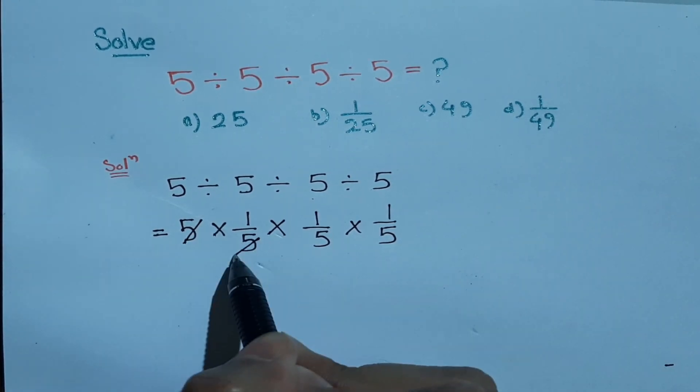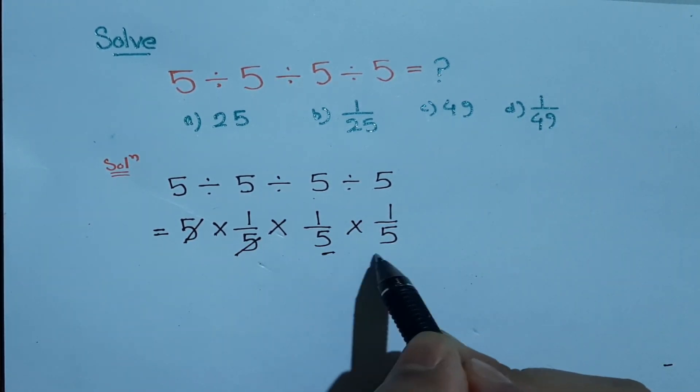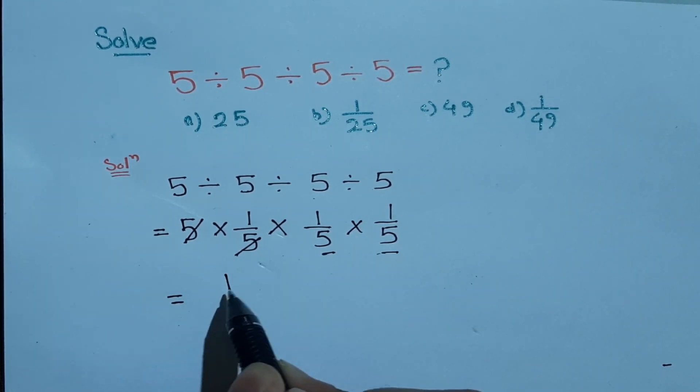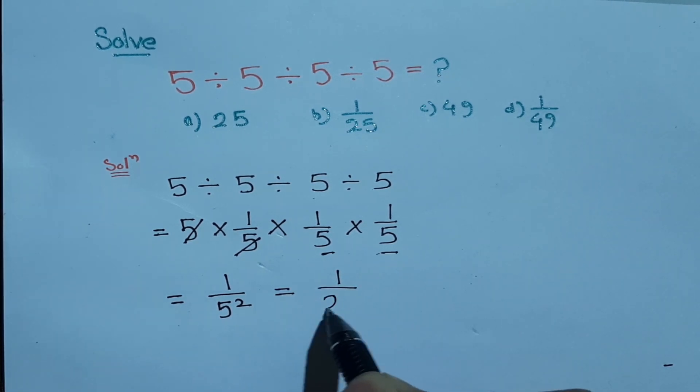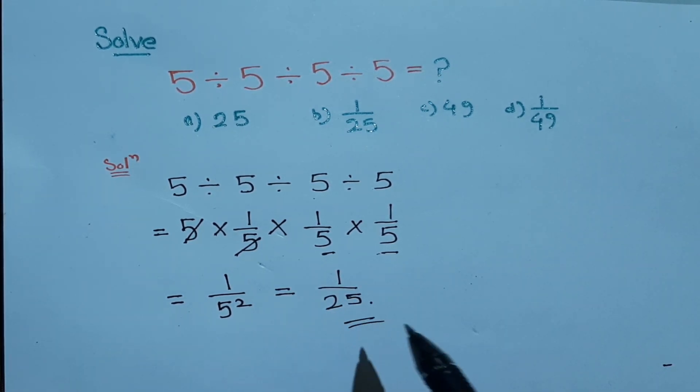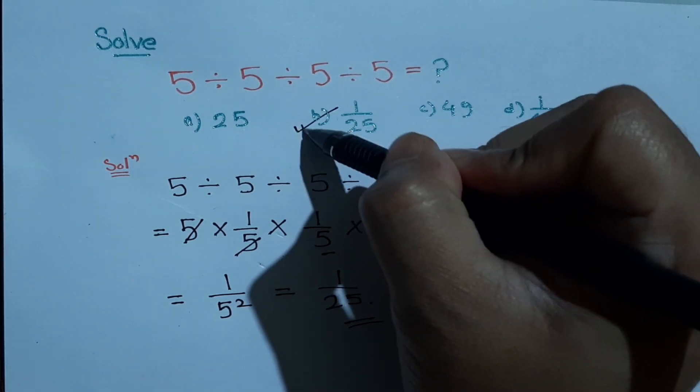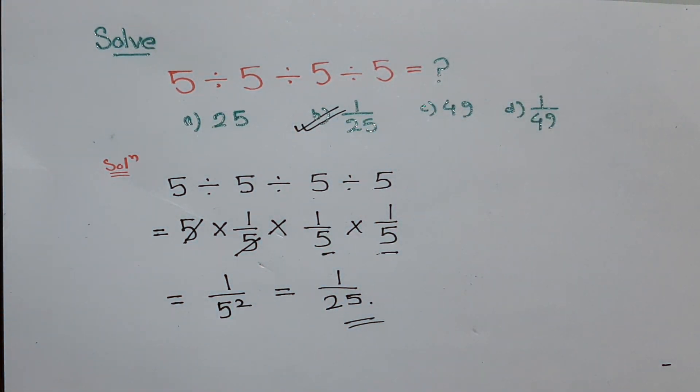And we know 5 into 5 will become 5 squared, so the answer will be 1 by 25. Answer B: 1 by 25. Thanks for watching guys, like and subscribe.